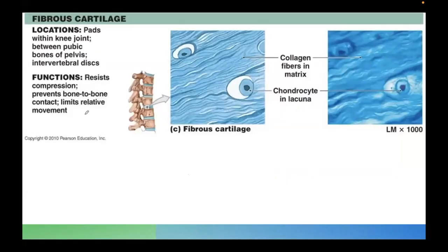I want you to remember that for the fibrocartilage, one of the major functions is to prevent bone-to-bone contact. That's why you usually see the fibrous cartilage in the vertebrae, as well as the symphysis pubis. You can see some fibrocartilage also in the pads of the knee joint. Number one function, to resist compression. Number two function is to prevent bone-to-bone contact. And lastly, to limit relative movement.